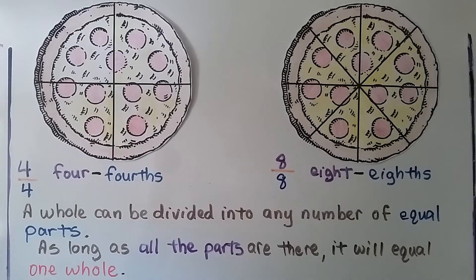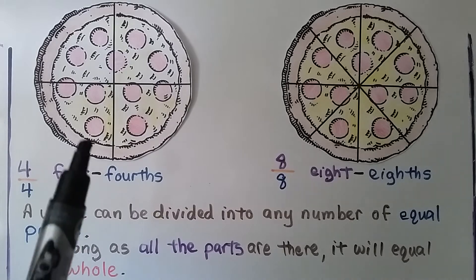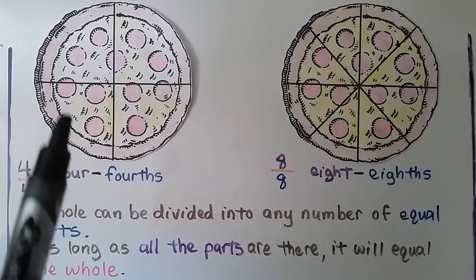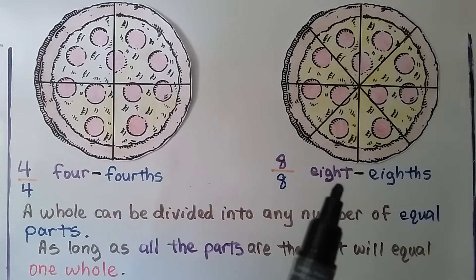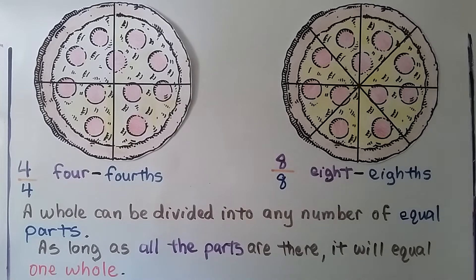Here we have two identical pizzas. This one is cut into fourths and we have four-fourths. This same pizza is cut into eighths, so we have eight-eighths. A whole can be divided into any number of equal parts.